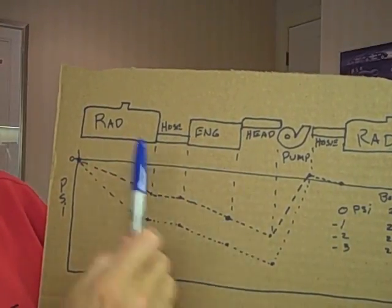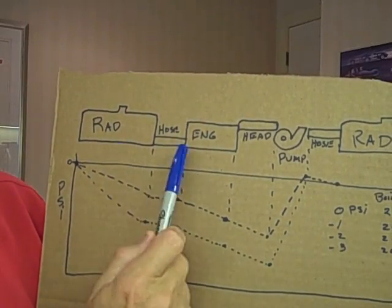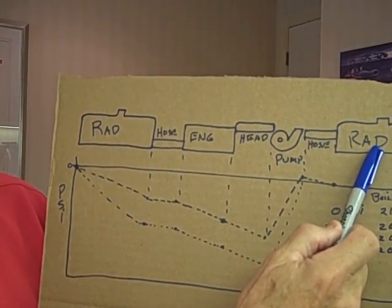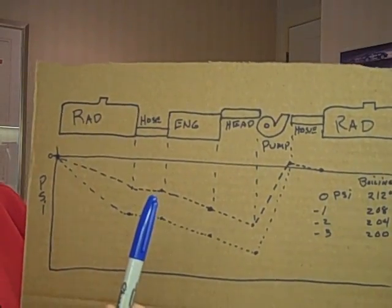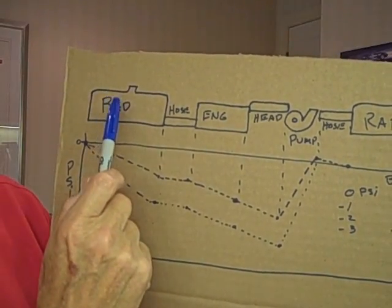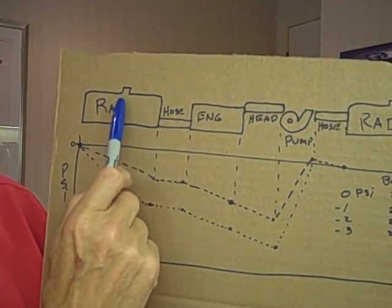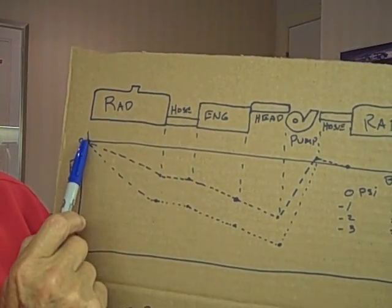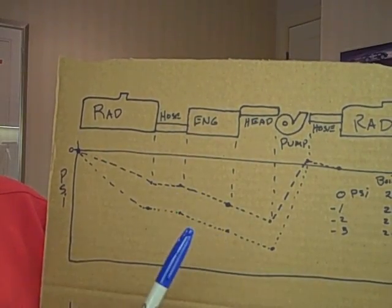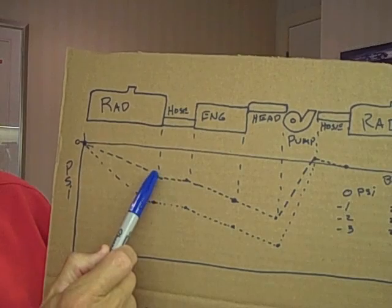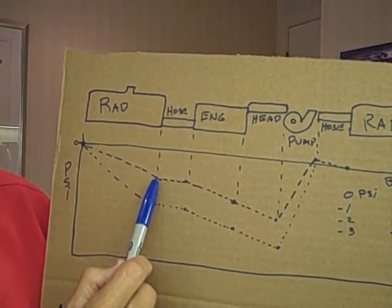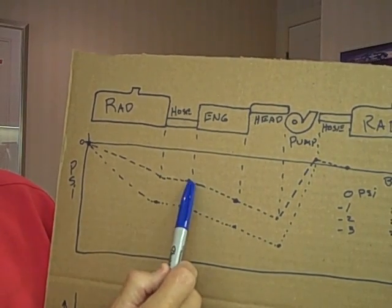Here we have the Model A cooling system: the radiator, the lower hose, the engine, the head, the pump, the upper hose, and back into the radiator. What we do know is the pressure in the top tank of the radiator is zero - it's open to atmospheric, that's a fact. As the water flows through the radiator, there's some restriction in it and there has to be a pressure drop.